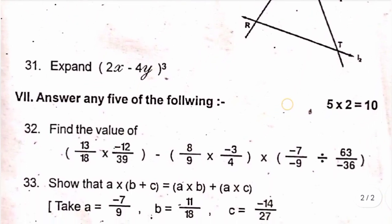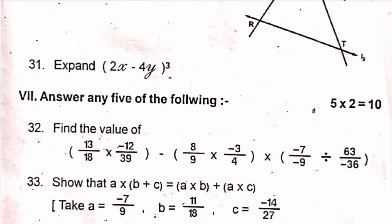Roman number 7, answer any 5 of the following. 32, find the value of 13 by 18 into minus 12 by 39 minus of 8 by 9 into minus 3 by 4 into minus 7 by minus 9 divided by 63 by minus 33.